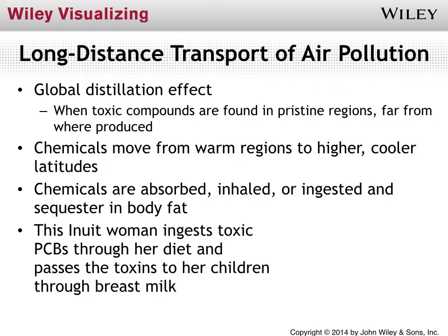Another challenge involves chemicals like PCBs and DDT, because they are fat-soluble. They can get into a system, be accumulated up a food chain, and then the top predator — whether a polar bear or a human — ingests those chemicals, which get stored in fatty tissues. The book starts with the example of Inuit women who have diets high in fat from seals or whales, and are then able to pass those toxins onto their children through breast milk.